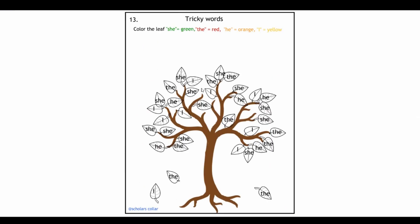Next, we are doing tricky words. For tricky words, all I did was draw a tree and put some leaves on it with she, the, he, and I. These are the words that Jolly Phonics introduces as tricky words in this group. You can really use any tricky words of your choice. I am given a color: she for green, the for red, he for orange, and I for yellow. All you are going to do is just ask your child to color the picture, the color of the leaf with the tricky word that has been with the designated color. Once they color that, you will find a beautiful tree there. This is a pretty simple worksheet you can do at home.